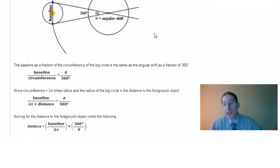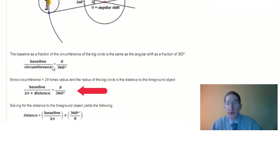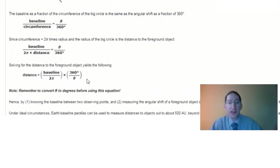And the circumference of the large circle is just two pi times its radius, and the radius is the distance between us and the object we're observing. So for circumference, we substitute two pi times the distance, we solve for distance, and then to calculate the distance to the object, you just need to know the baseline, the distance between the two observing points, and the angular shift, which you have to remember to convert to degrees.